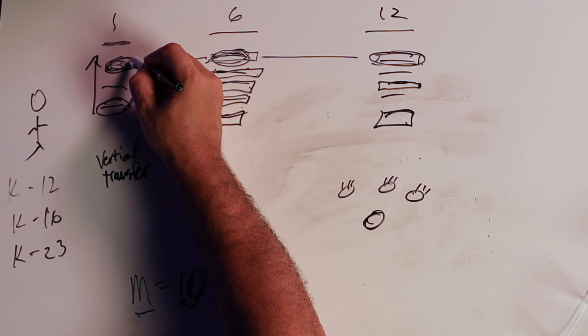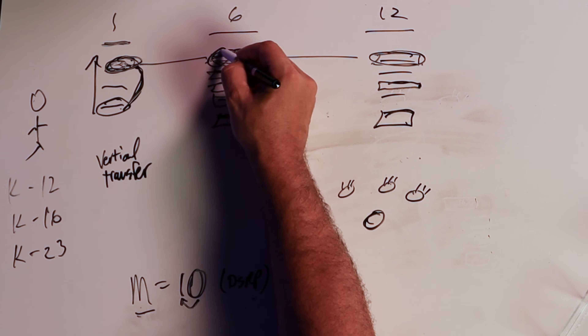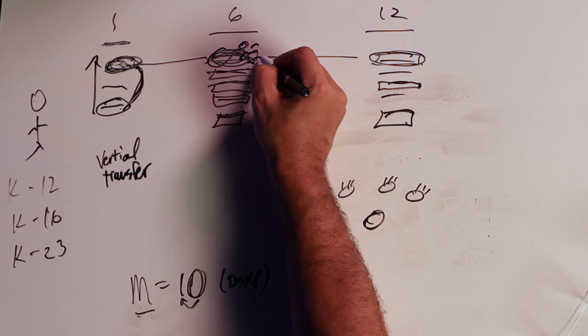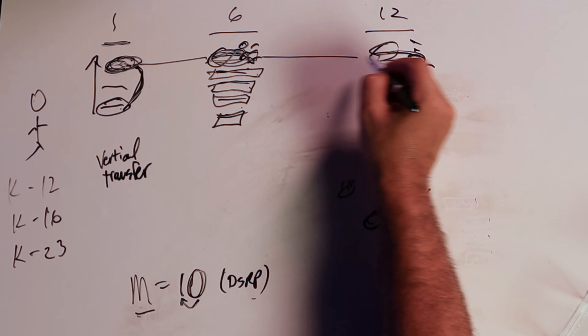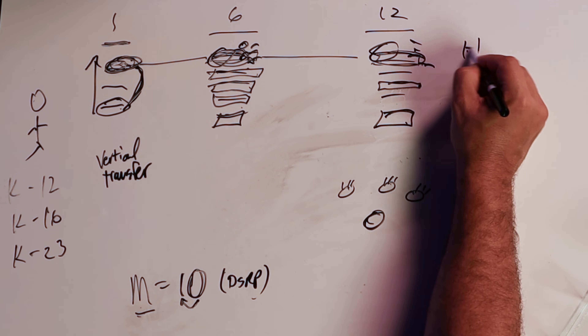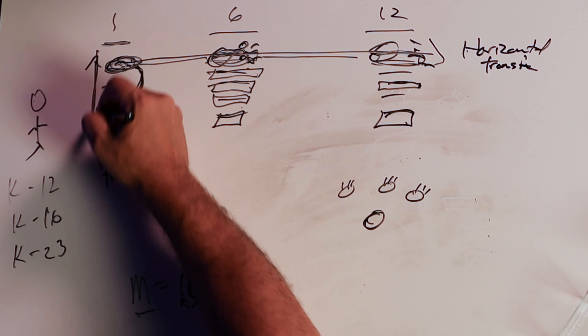Vertical transfer happens across topics. And when a kid sees that what they learned was structured a certain way, and we're just building on that structure with more information, and then adding more structure and more information further along — that's called horizontal transfer, because it's the same topic across the grades. So that's one kind of transfer, and vertical is another kind.